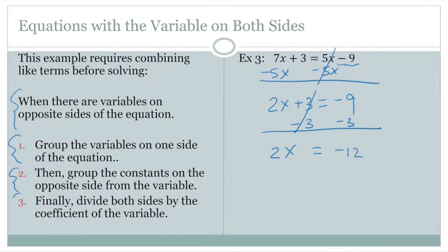Our final step is to divide both sides by the coefficient. So we divide by 2. The 2's cancel, giving us x equals negative 6.